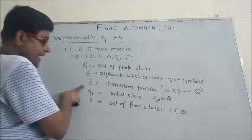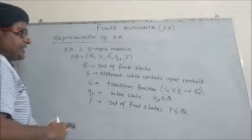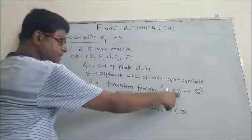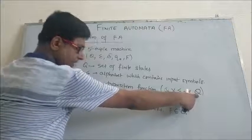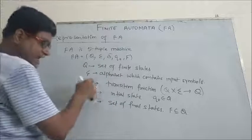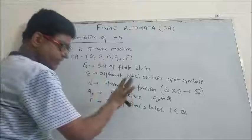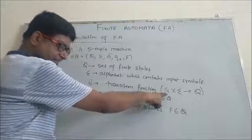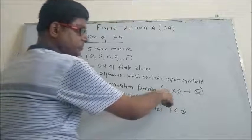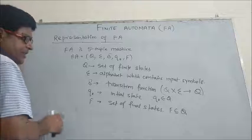The third component is delta (δ), the transition function. The transition function means: when you are residing on any state q and any input symbol is given to you, you will reach either the same state or some other state. In other words, if you are on one state and given some input symbol, you can reach to another state or remain on the same state. That is known as your transition function.